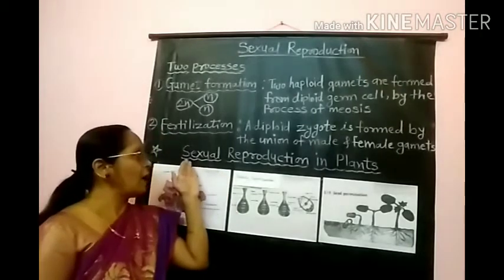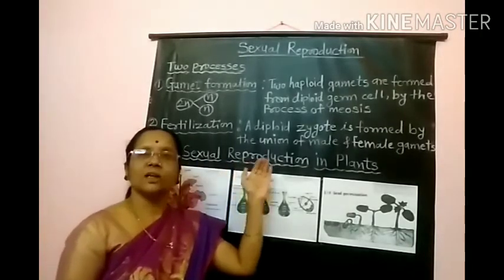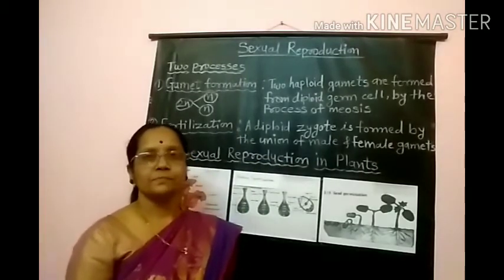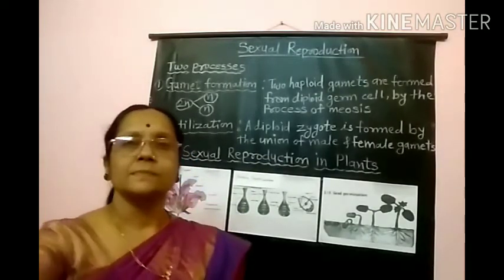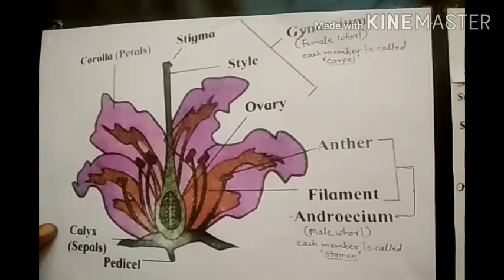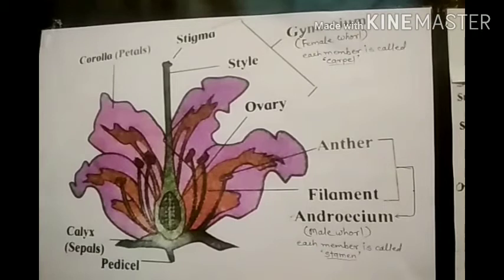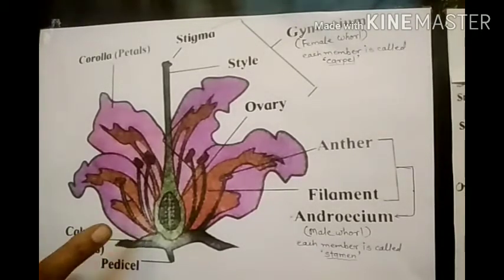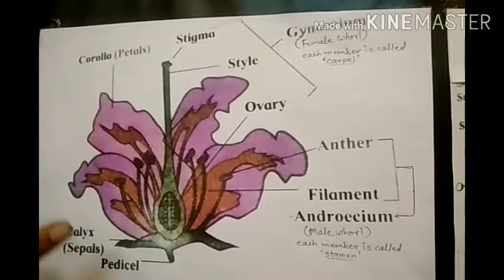We will now start with sexual reproduction in plants. In plants, the flower is a unit of reproduction. The flower is the important part which takes part in sexual reproduction in plants.